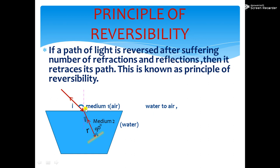In this case, here it is refraction. From here, it is a reflection. Again, it is a refraction. So, number of refractions and reflections. Then also, it retraces its path. This is known as principle of reversibility.